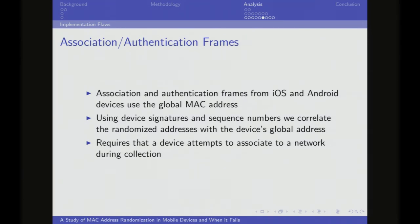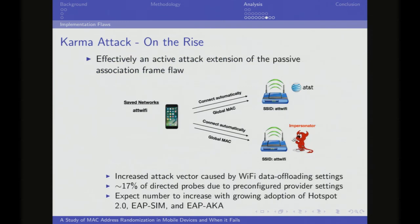Another passive method is linking association and authentication frames back to probe requests using sequence numbers, which stay monotonically increasing as they transit from a probe request to associating with an access point while switching to a global MAC address. This only works if you were lucky enough to collect while somebody is trying to associate and authenticate. This brings up the Karma attack — basically an extension of the fact that the global MAC gets sent during association. Interestingly, with hotspot 2.0 and EAP-SIM/EAP-AKA for automatic cellular-to-Wi-Fi offloading, directed probes are being used more and more again, allowing us to reinstitute the Karma attack.